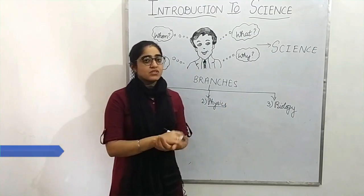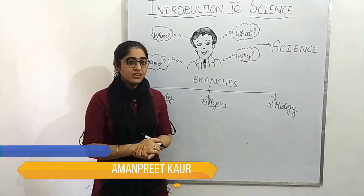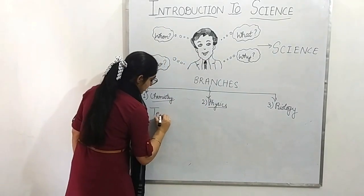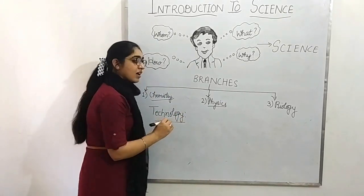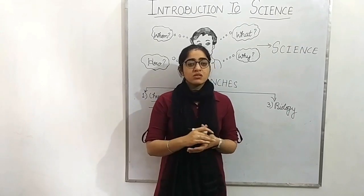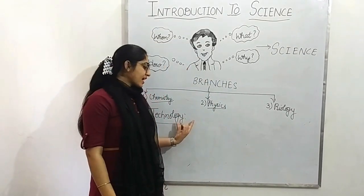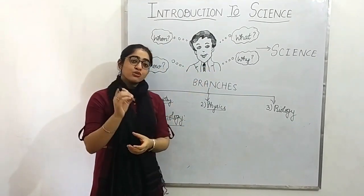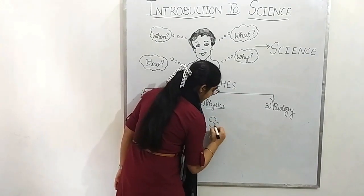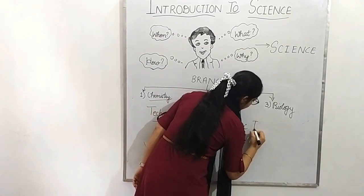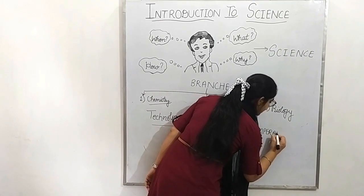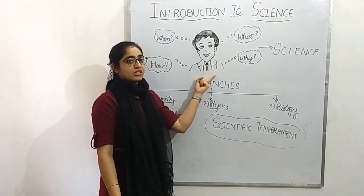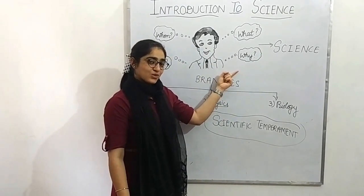So these were the main three branches of science. You may have heard that nowadays we say it is the age of science and technology. Technology means the science of creating something new — the science of creating a new substance is called technology. So dear students, you should develop scientific temperament, which means that whenever you see anything, you should find out the answers to all your queries. Thanks to all.